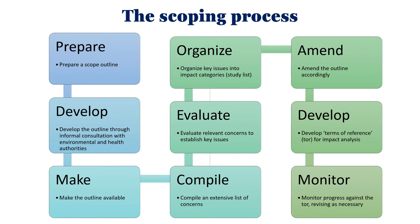The actors in scoping are the proponent, EIA consultants, the supervisory authority for EIA, other responsible agencies, and the affected and interested public. The scoping process involves preparing a scope outline, developing the outline through informal consultation with environmental and health authorities, making the outline available, compiling an exhaustive list of concerns, evaluating relevant concerns to establish key issues, organizing issues into impact categories, amending the outline accordingly, developing terms of reference (TOR) for impact analysis, and monitoring progress against the TOR.